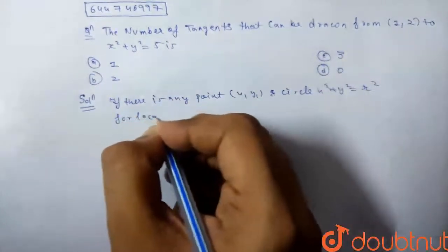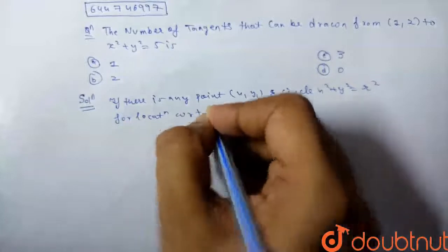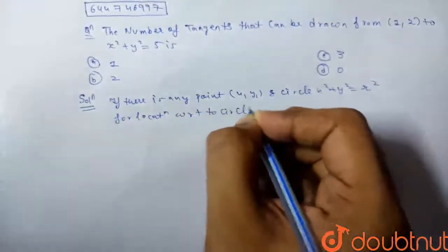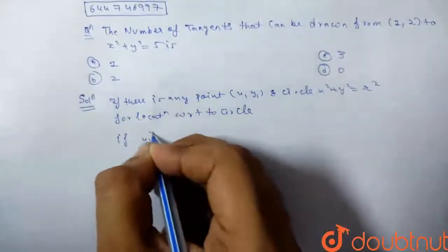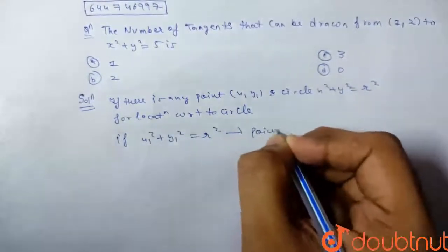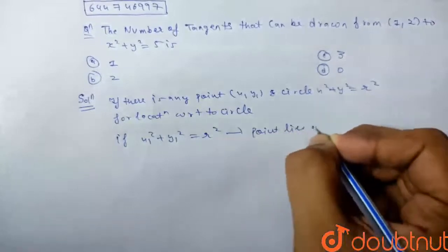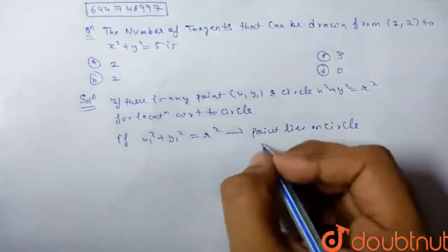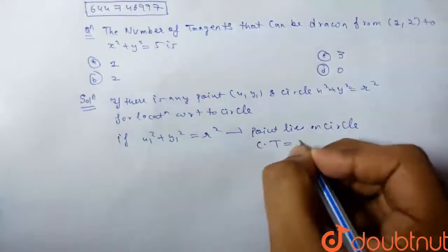for location with respect to the circle: if x₁² + y₁² = r², the point lies on the circle, and the common tangent is equal to 1.